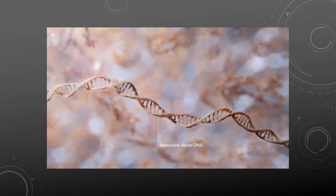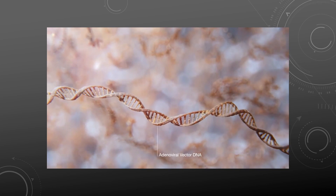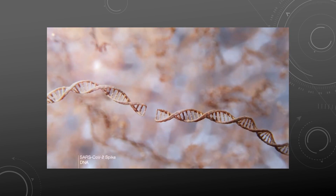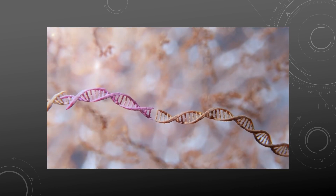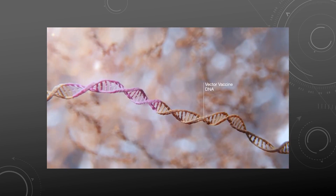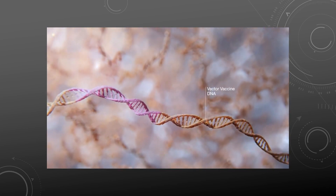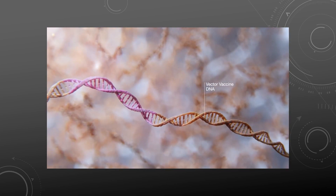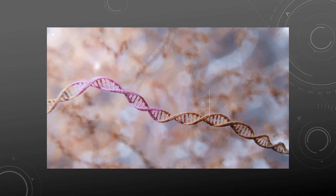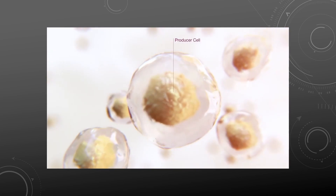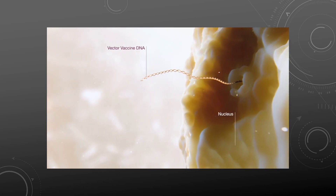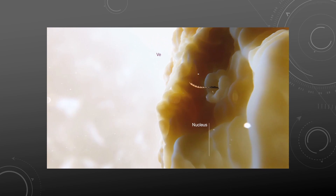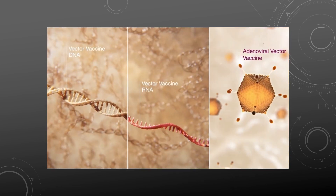Adding the coronavirus spike protein DNA creates the full genetic sequence for the adenoviral vector vaccine. The genetic code is introduced into a producer cell where it is transcribed and translated to form the COVID-19 adenoviral vector vaccine.